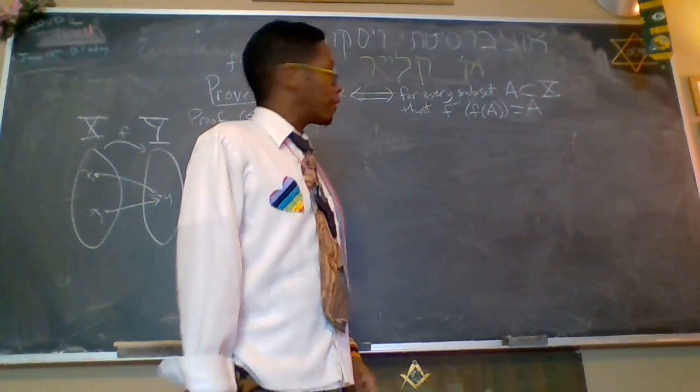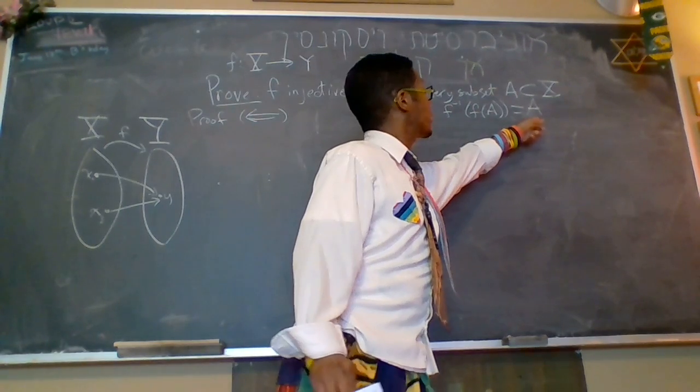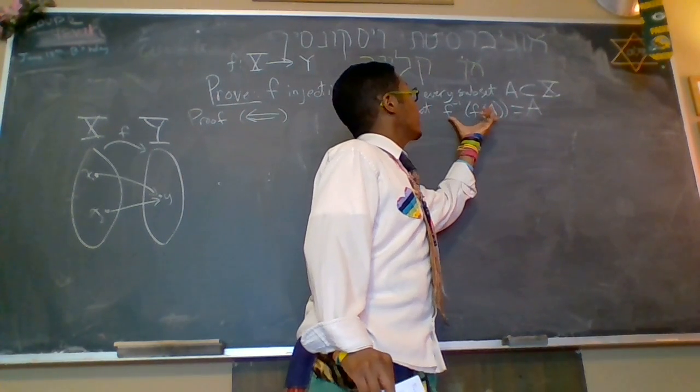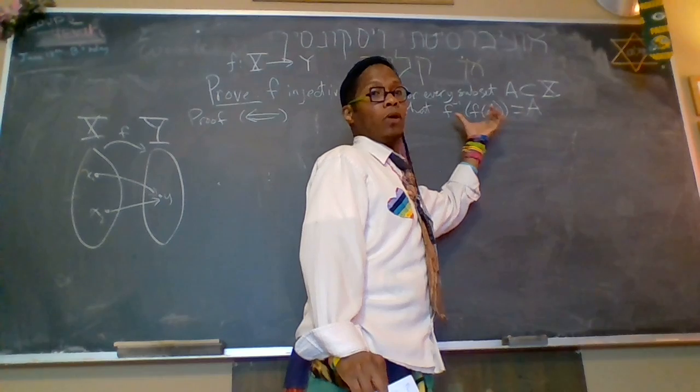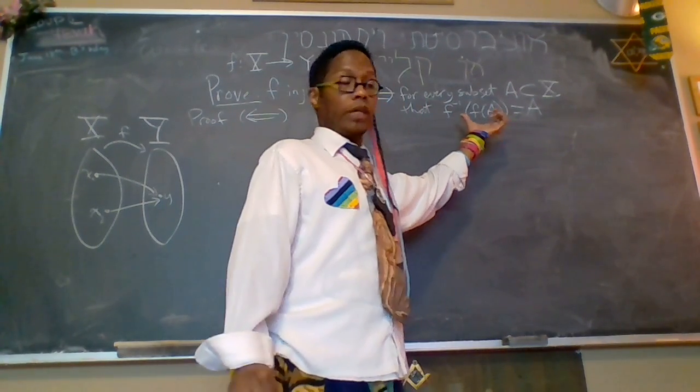that the pre-image of the image of the subset A is actually identical to A. And we always have the fact, regardless if f is injective or not, that A is a subset of the pre-image of the image of A. That's always the case, regardless if f is injective or not.